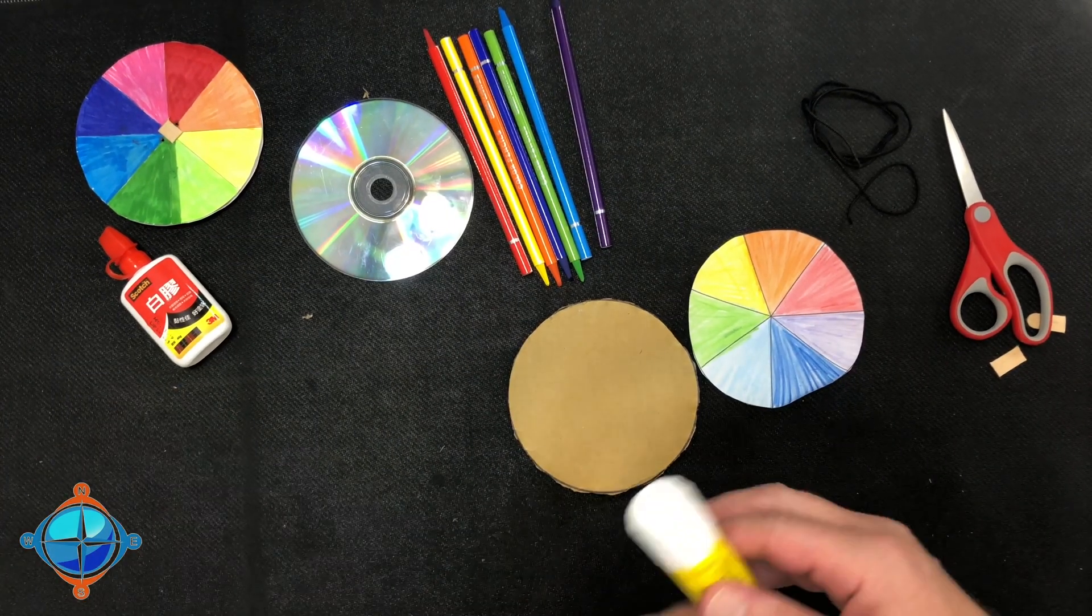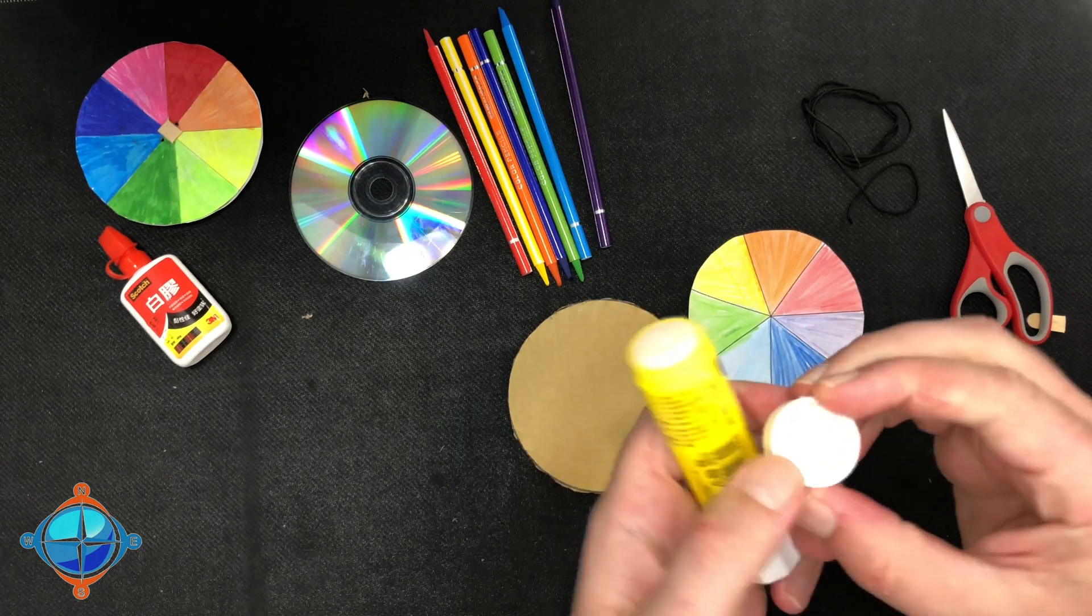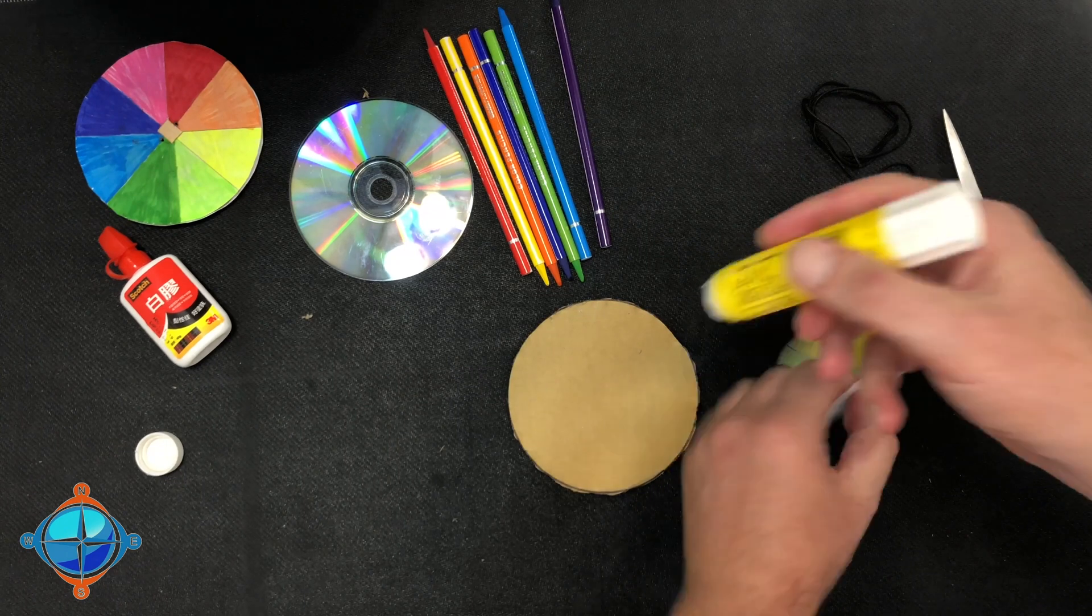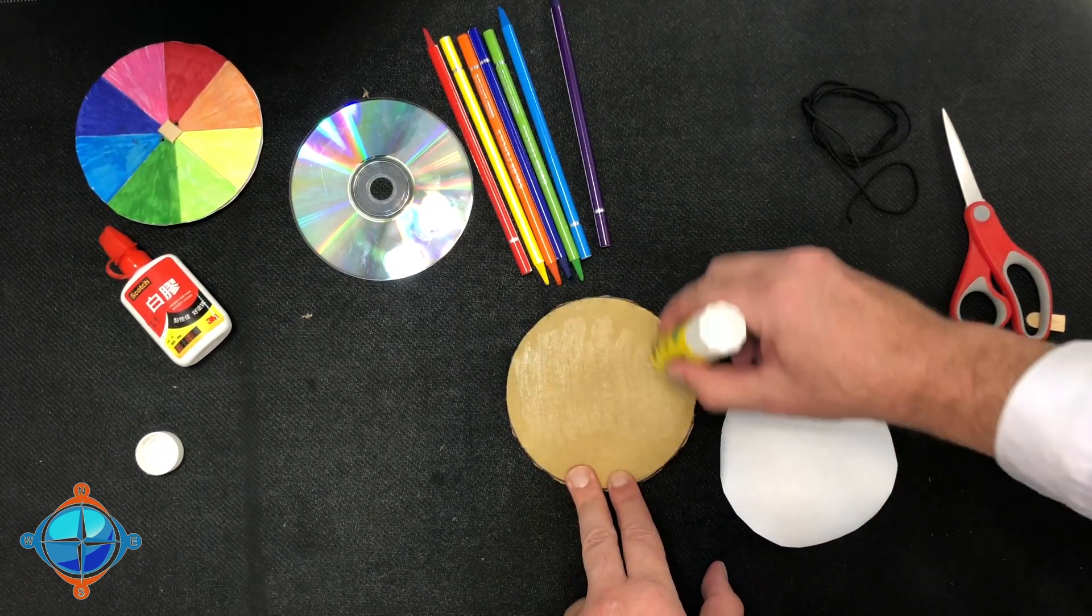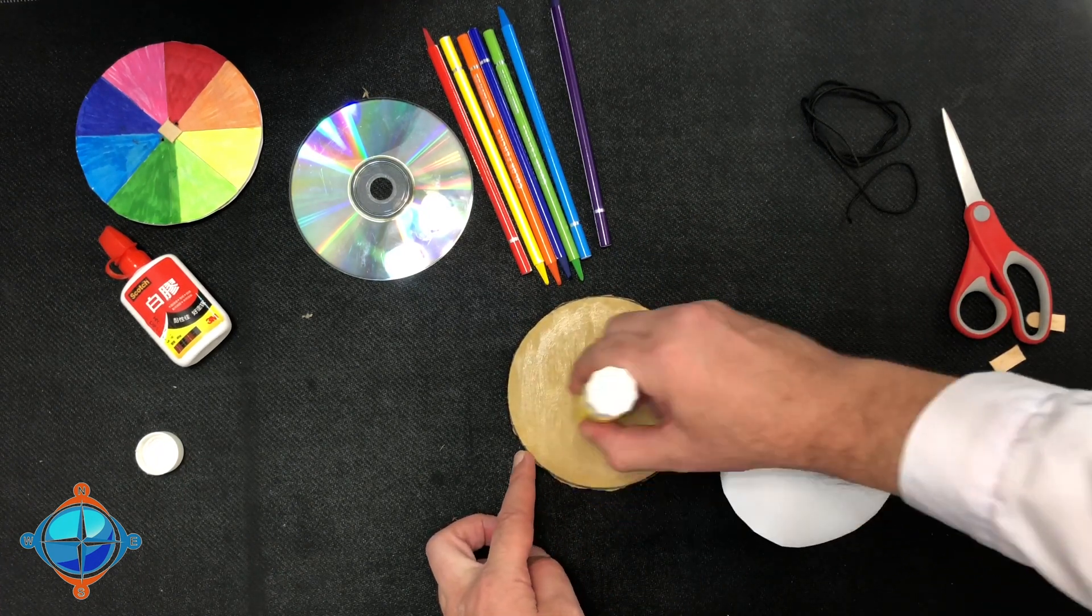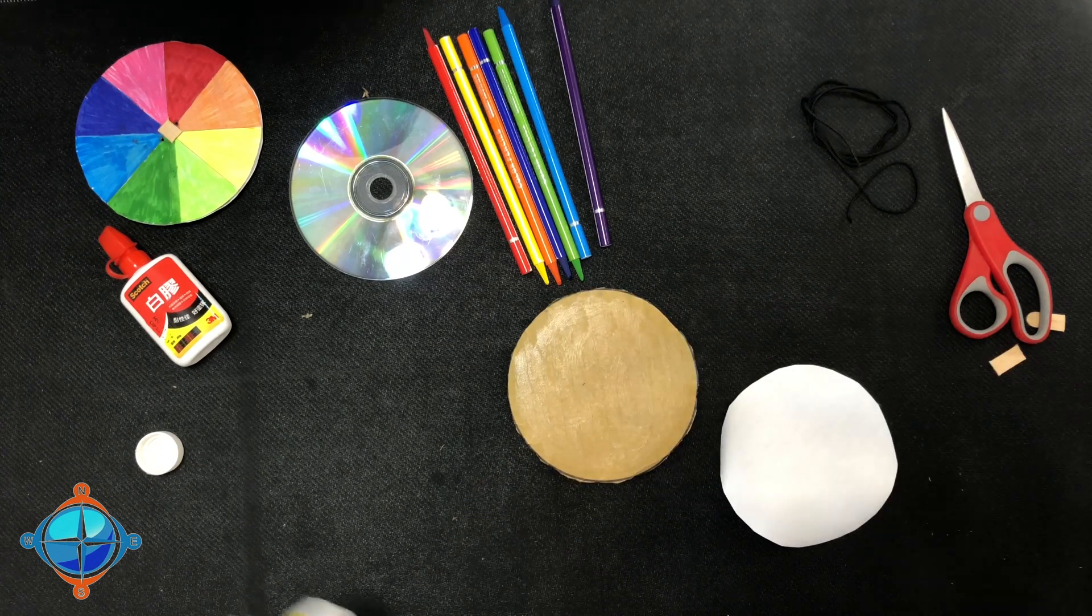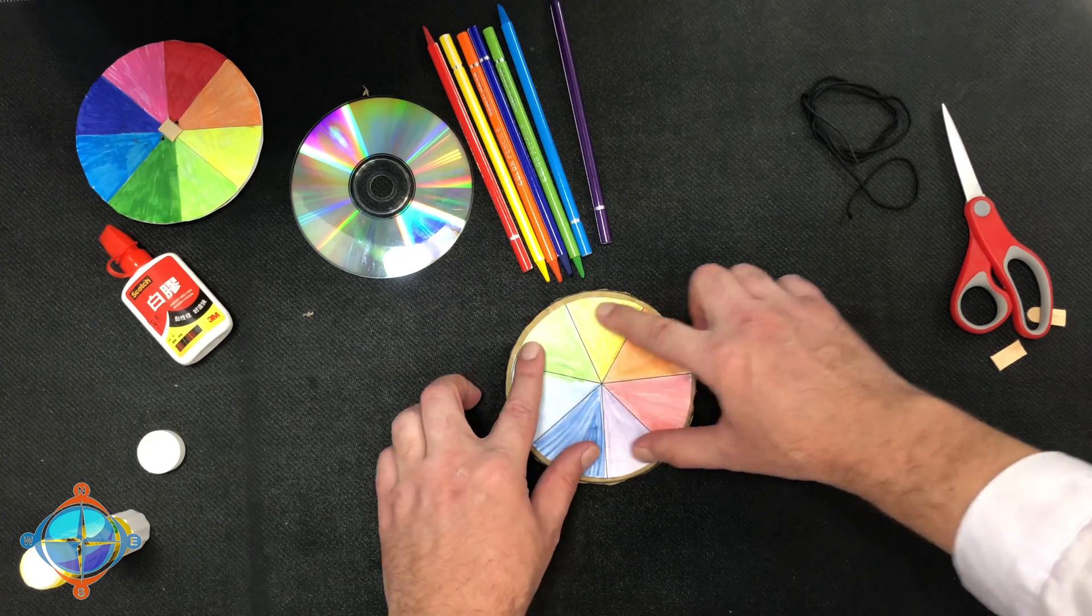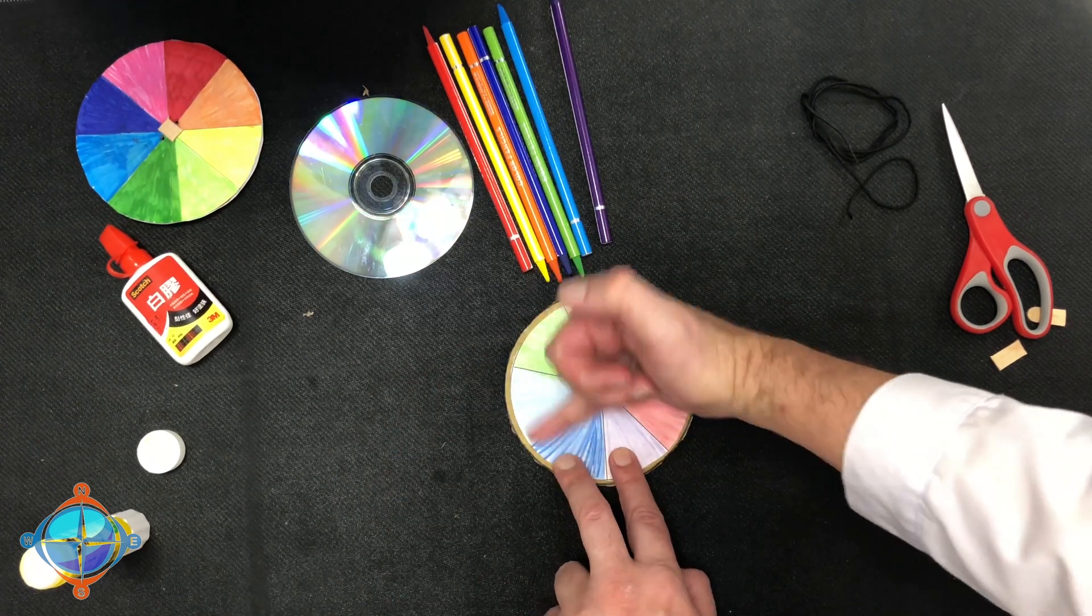Then you want to glue it onto your cardboard and I like to use the glue stick. Try to glue everywhere. That looks good and you can stick it on. You want to fold it and make sure it's all over.